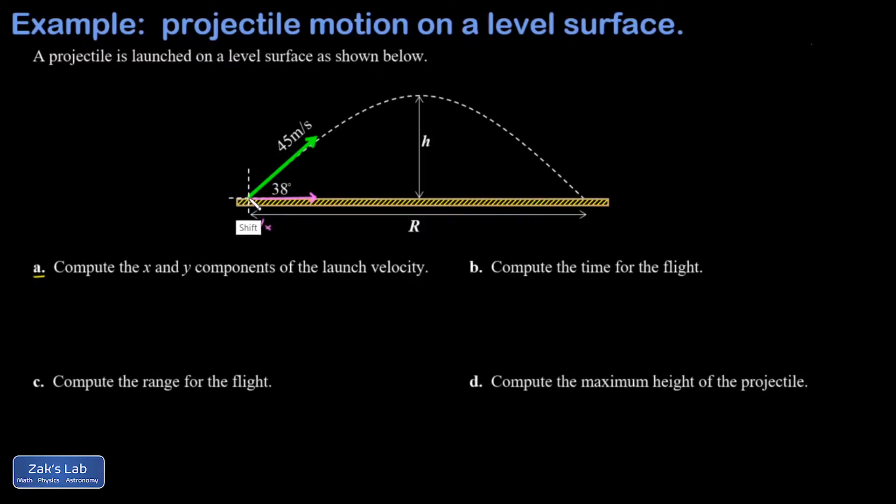And a vertical piece that I call Vy. That horizontal piece is given by the adjacent leg of the right triangle when we break this vector into components, so that's given by the hypotenuse 45 meters per second multiplied by the cosine of the angle, cosine 38. When I run the numbers on this I get 35.5 meters per second for the horizontal component of velocity.